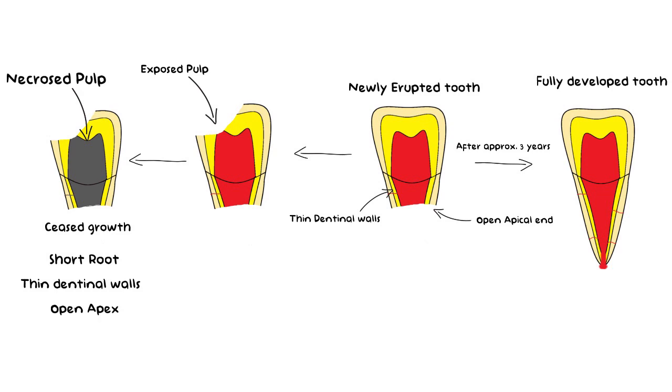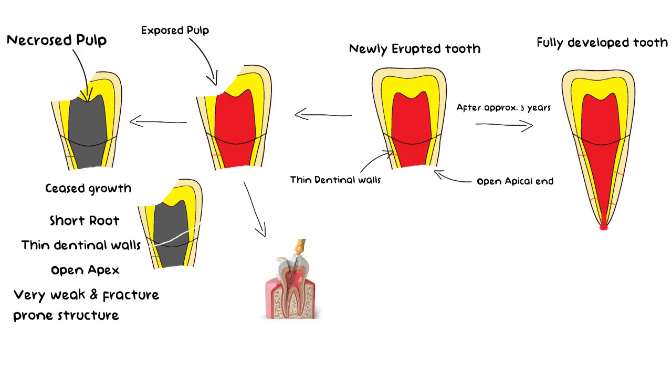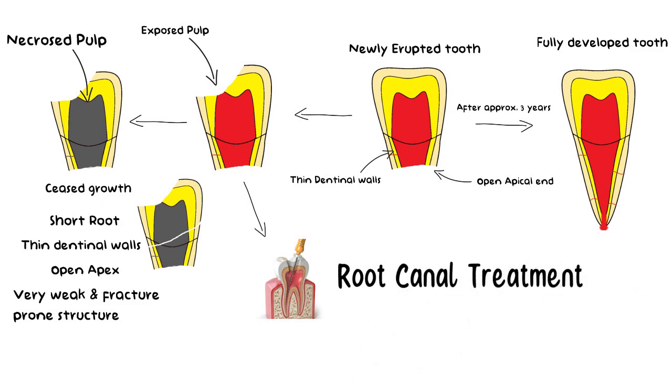This tooth, because of the thin root and the dead pulp, can easily be fractured and is very weak. In addition, open apex provides a serious challenge in treatment because conventional root canal treatment is not an option since apical closure hasn't been achieved yet, and therefore root canal treatment becomes unpredictable and unreliable in these cases.